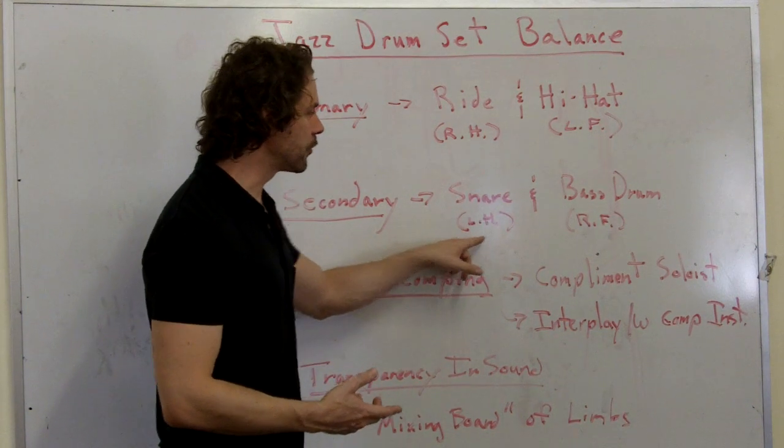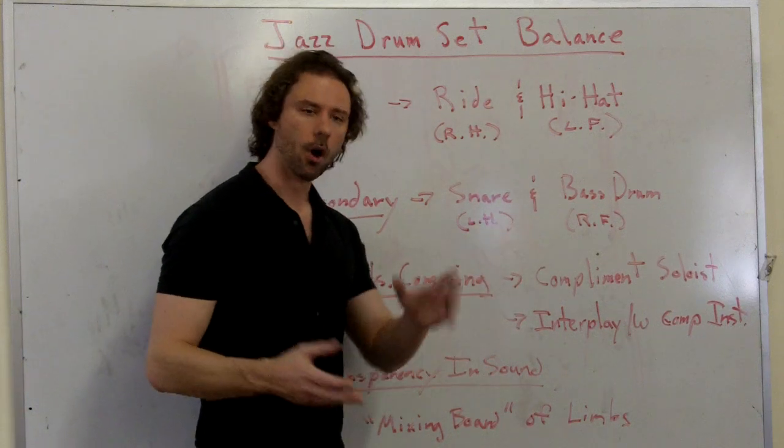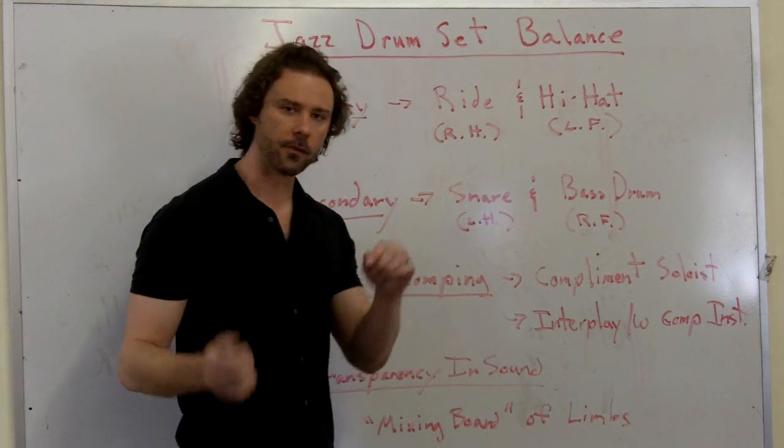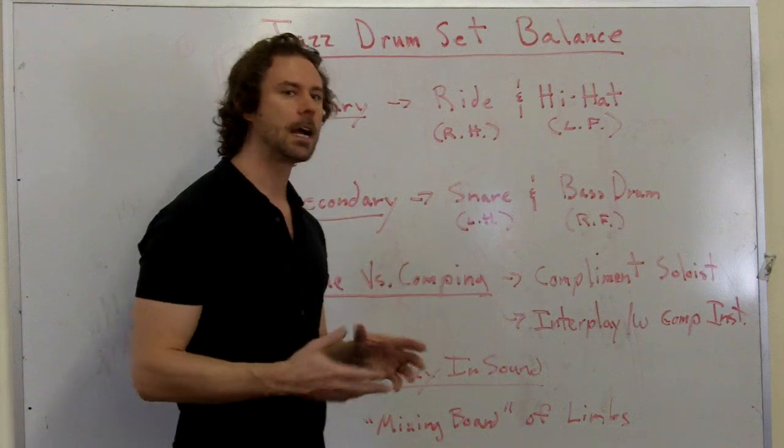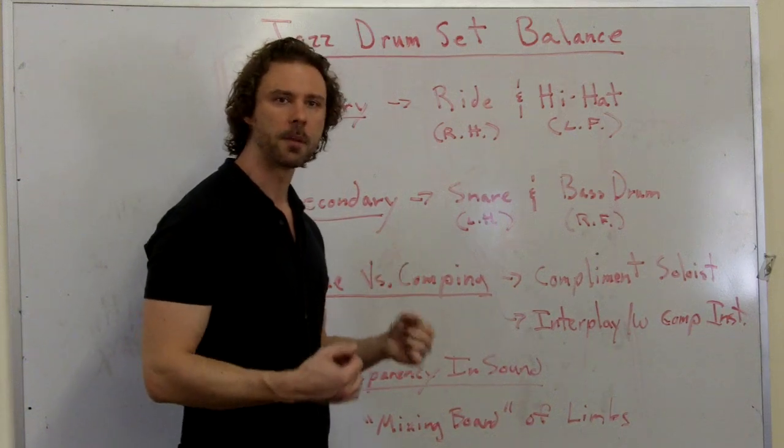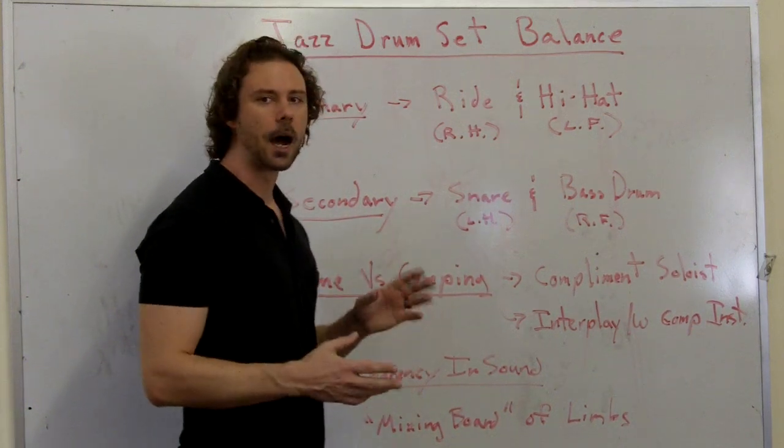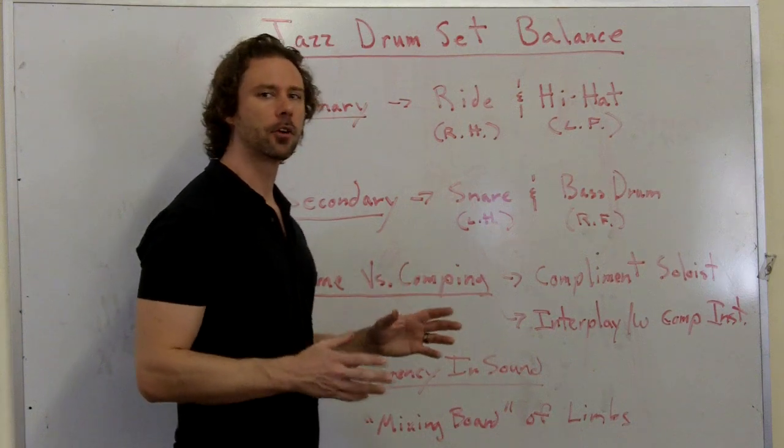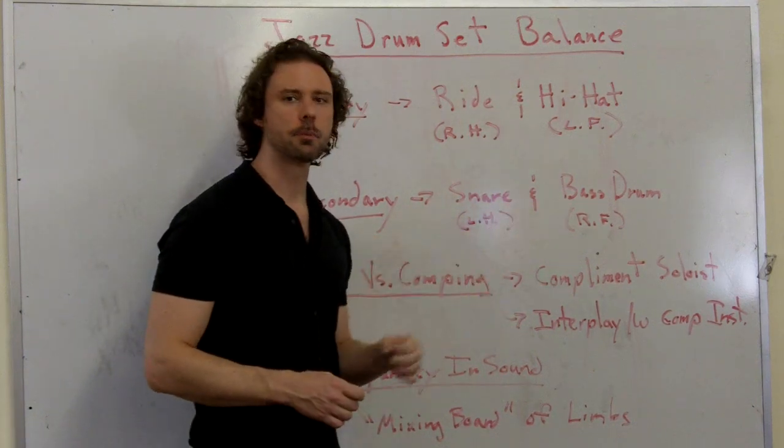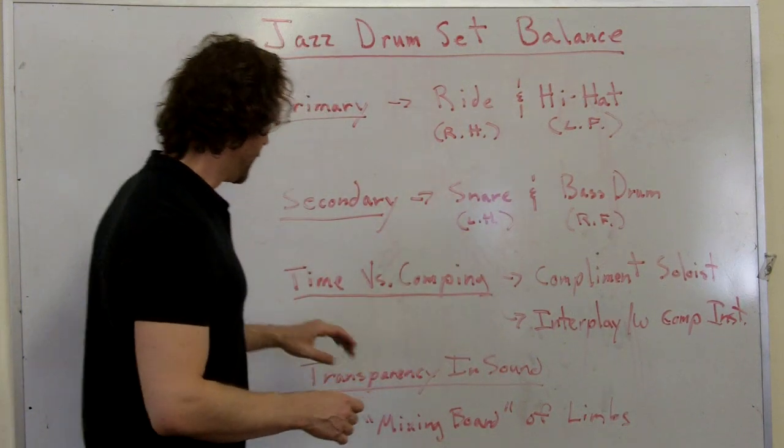Now, it doesn't mean to say that these are the only two sound sources. On a four-piece kit, we also have two other toms, and any other variety of sounds you can pull from the instrument are legitimate in comping. But in general, when you start learning to comp, these are the two instruments you're going to stay on.